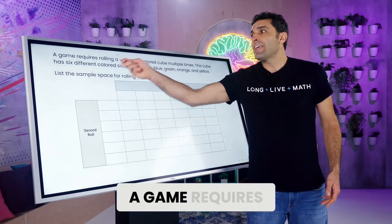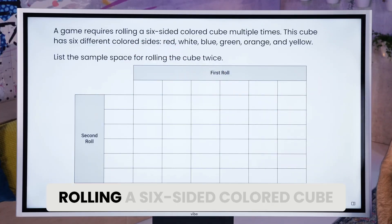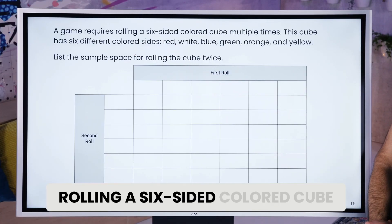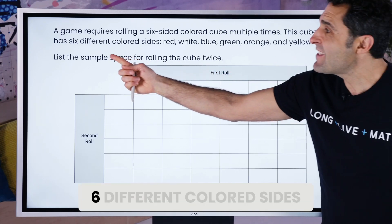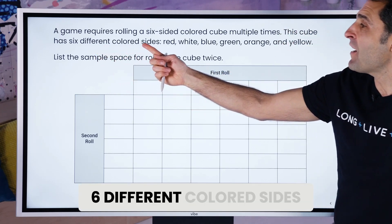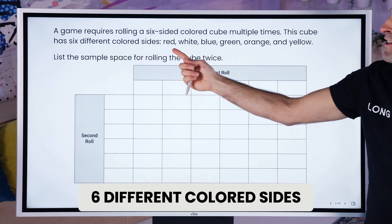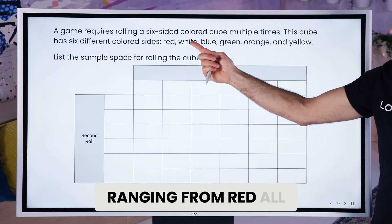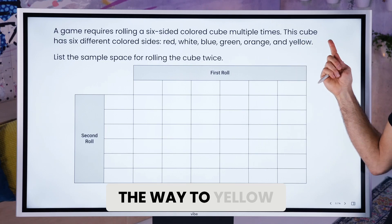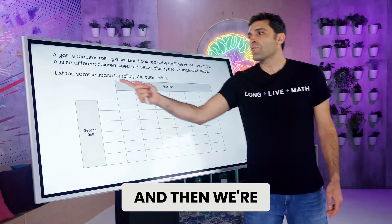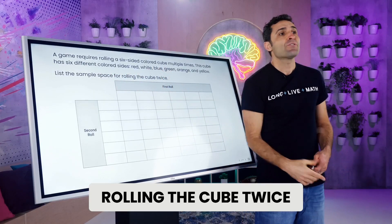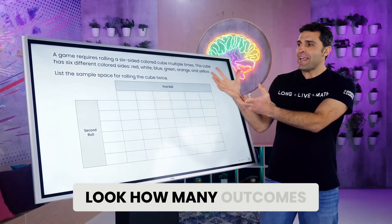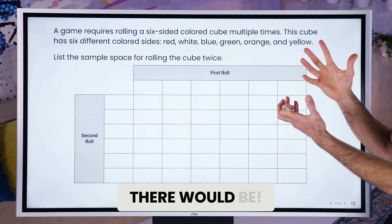A game requires rolling a six-sided colored cube multiple times. This cube has six different colored sides, ranging from red all the way to yellow. And then we're rolling the cube twice — look how many outcomes there would be.